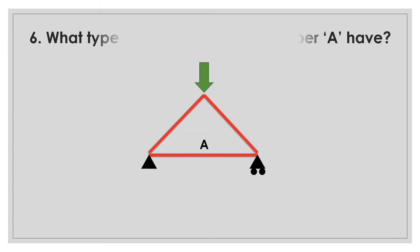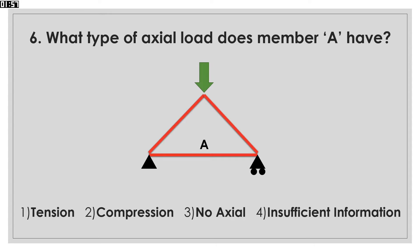What type of axial load does member A have? If you press down the top point of this structure, the two sloped members will be in compression, which will push the roller support to the right and hence put member A in tension.